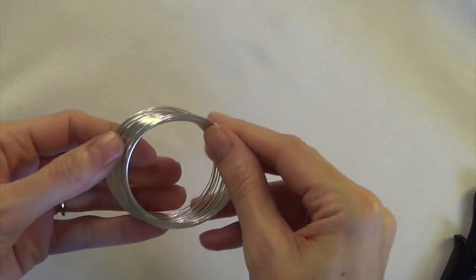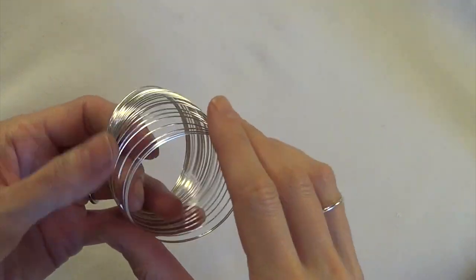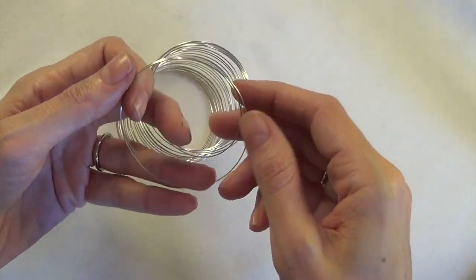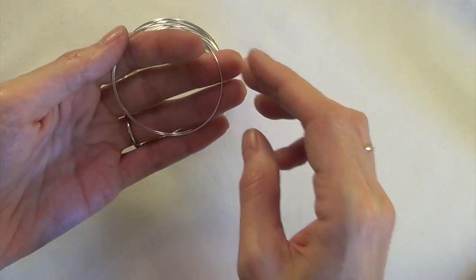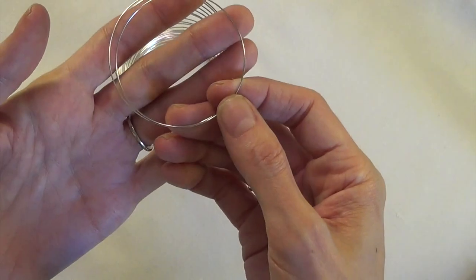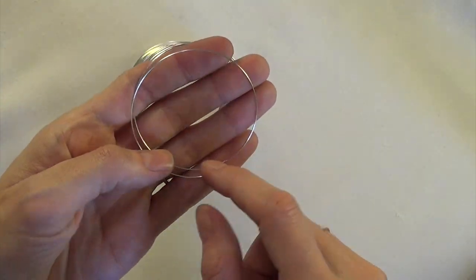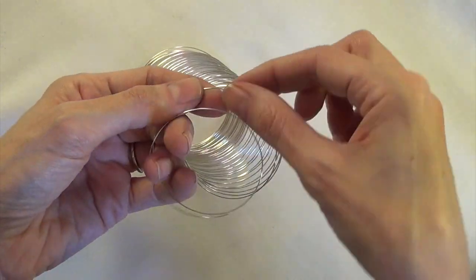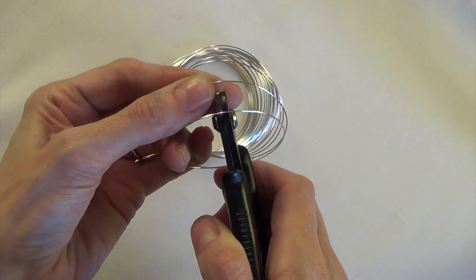So the first thing you're going to do is you're going to take your memory wire coil and you want to cut off about one and a half loops. So see where the wire overlaps here and go to the other side, make sure you're on the second coil down and cut it right about there, so just about one and a half loops.